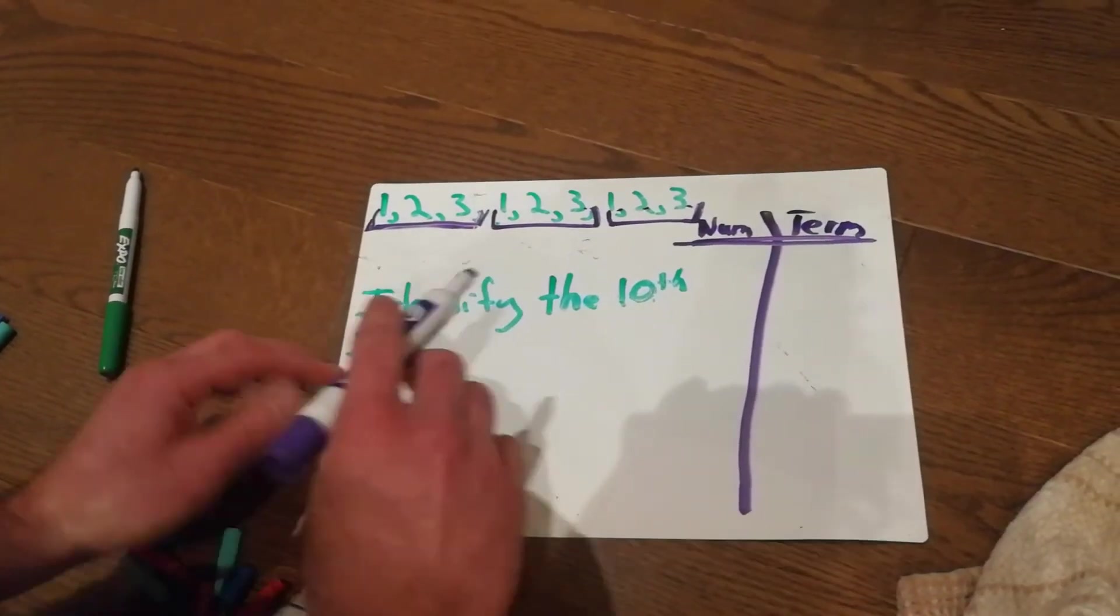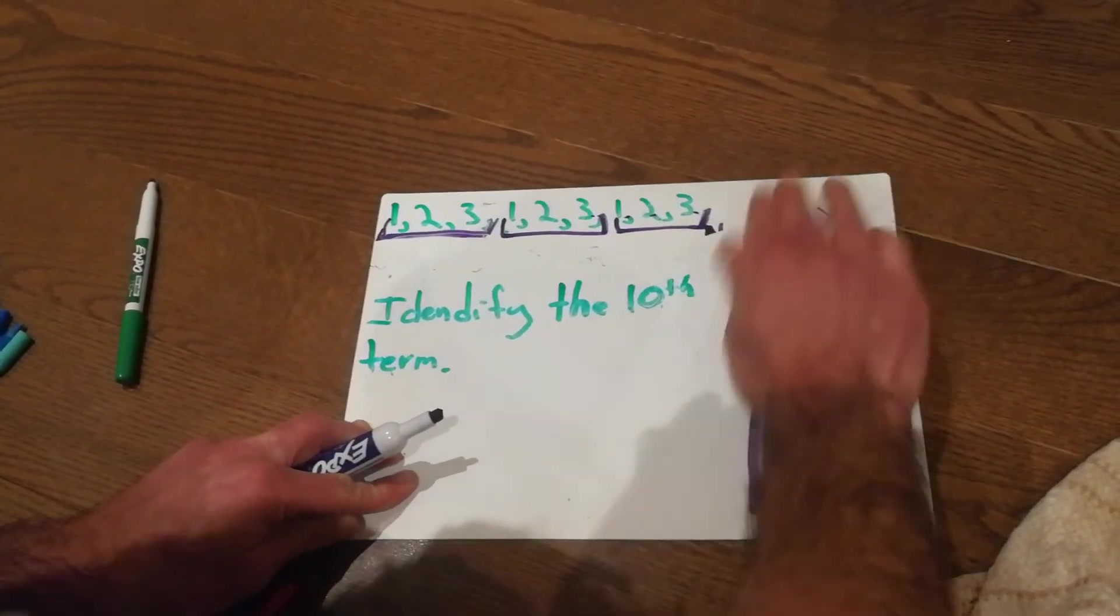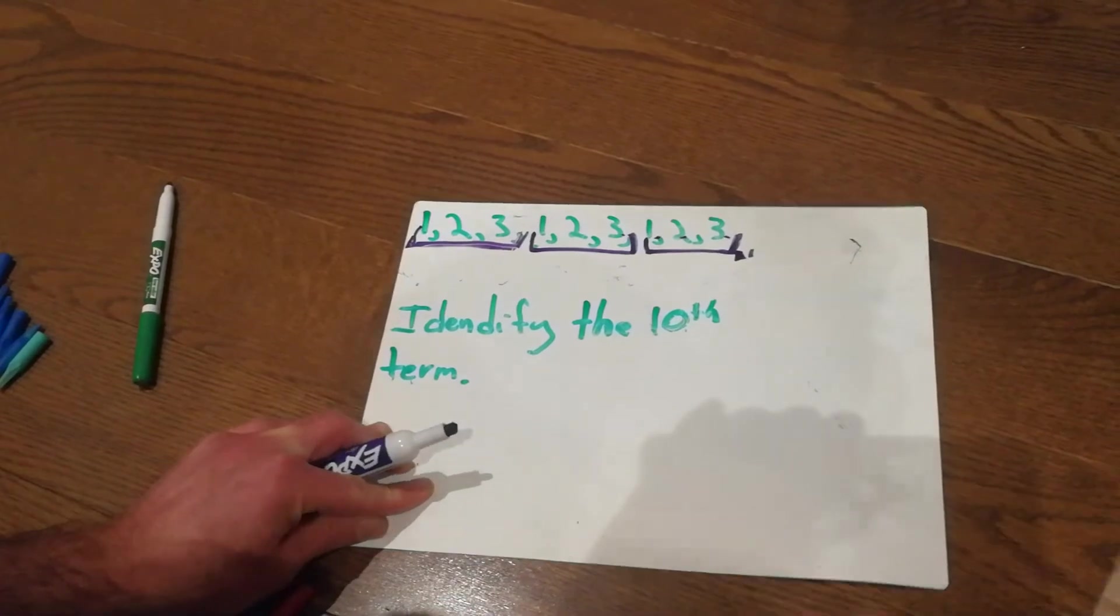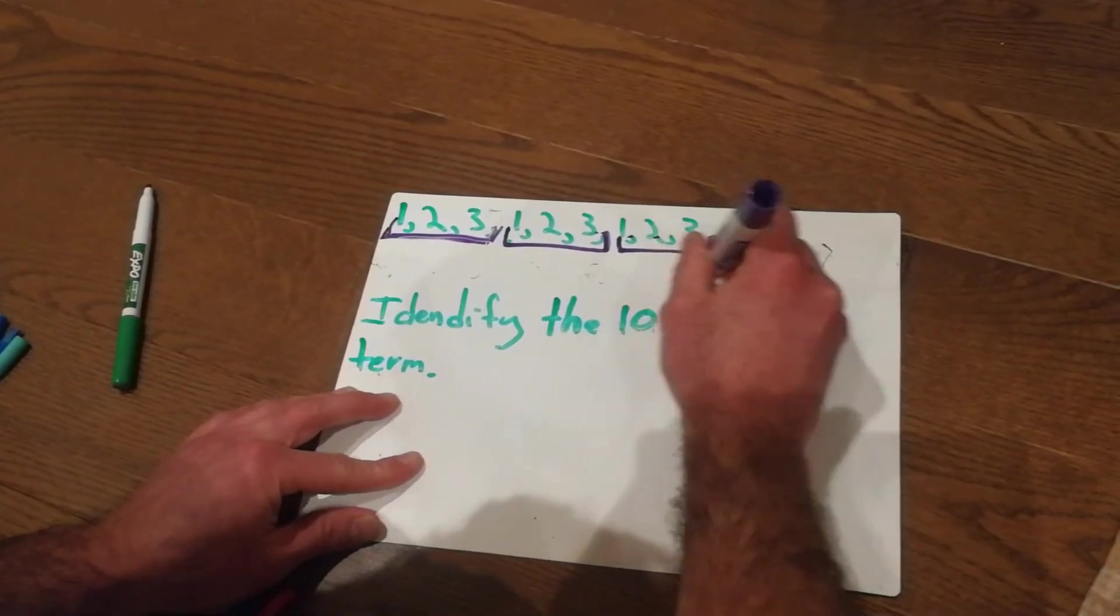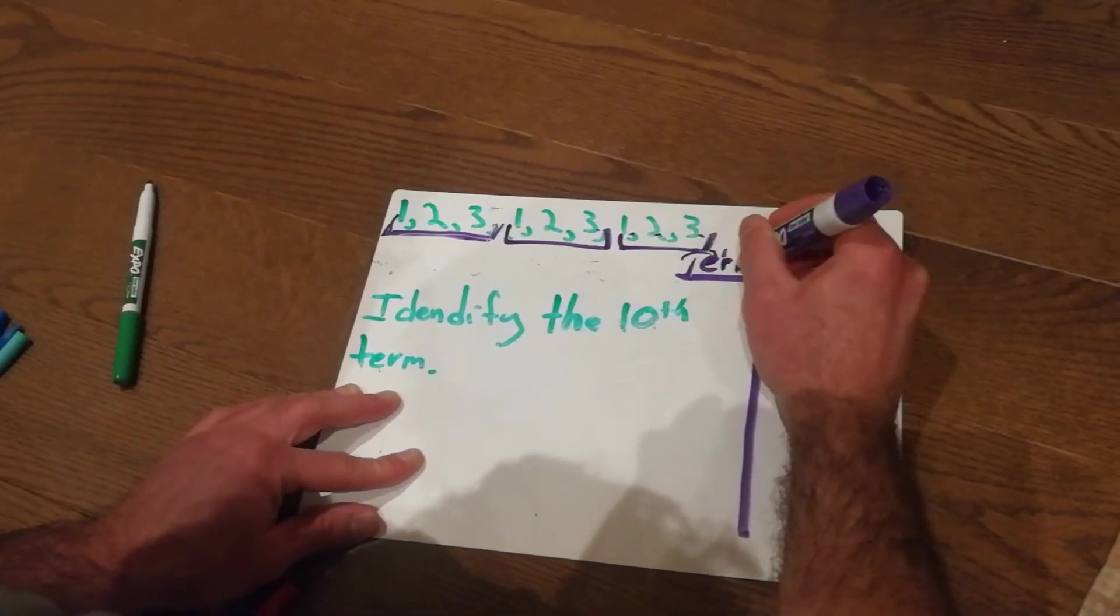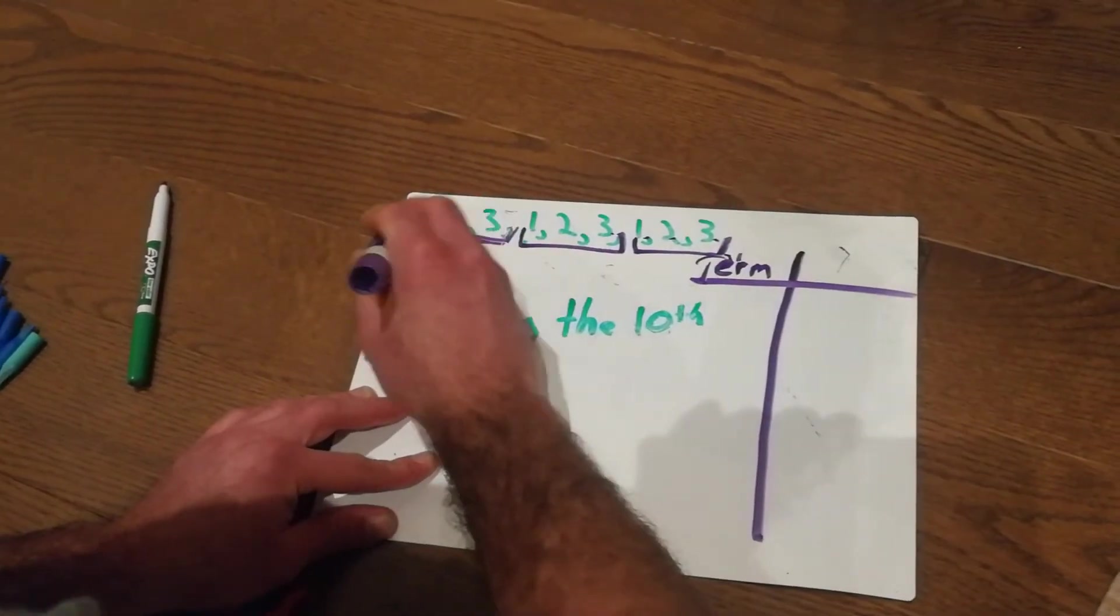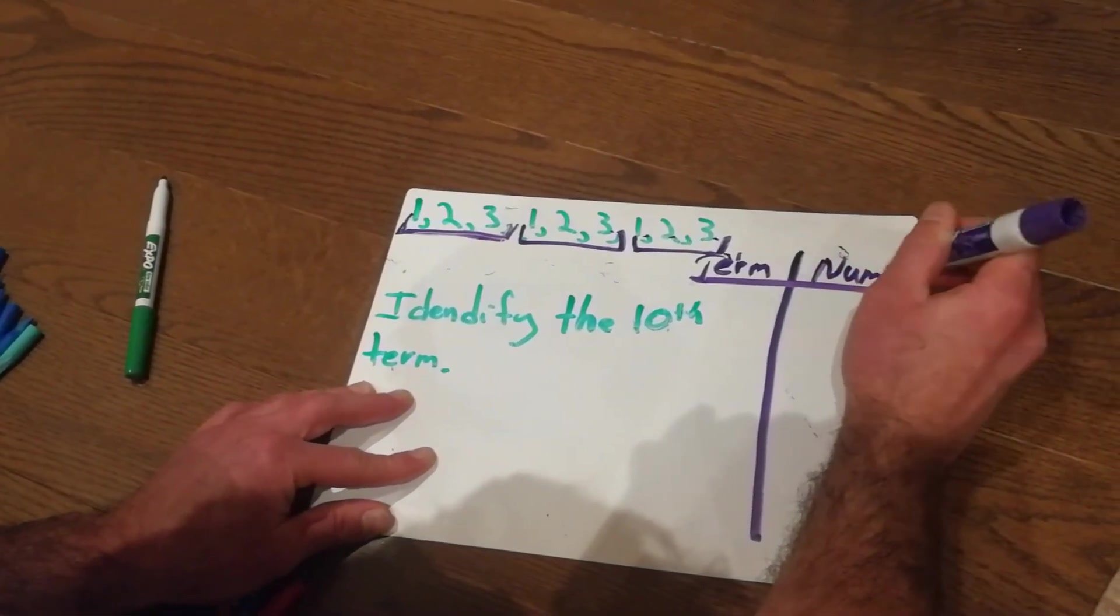So, oops, I made that, I did that backwards, I'm sorry. Let me redraw this, my apologies. Let's draw it again. We have term, and because in this pattern we're looking at numbers, we're going to label this side number. I'm going to write N-U-M.